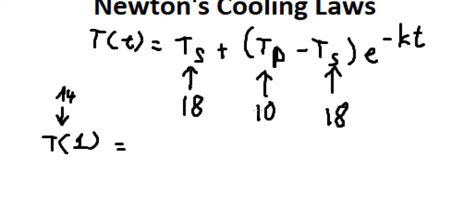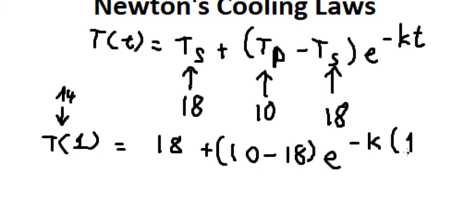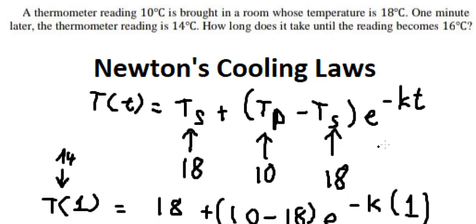So the value in here, we have 18 plus (10 minus 18) multiplied by e to the power of negative K times 1. Now we need to find the value of K. Later, we can use the value of K to find the value of T for 16 degrees Celsius.